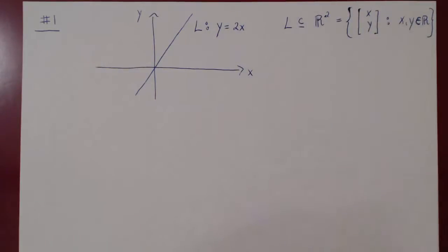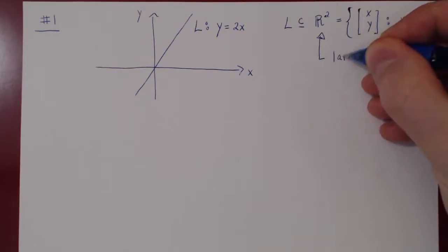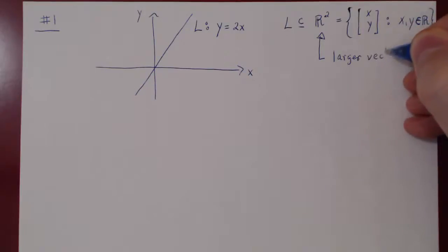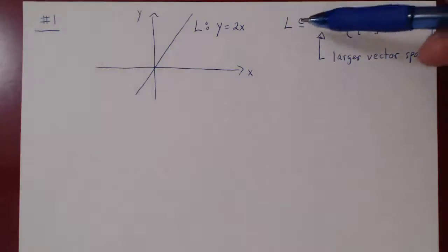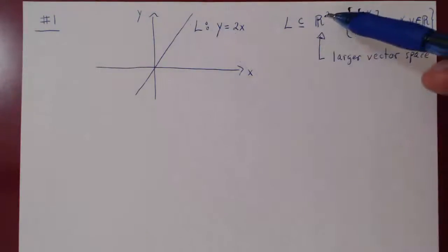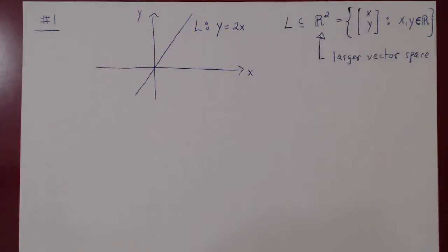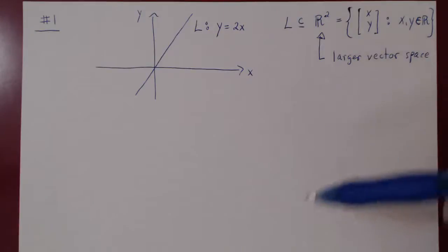We know R² is a vector space — Rⁿ for any positive n is a vector space — so R² here will play the role of our larger vector space. Now that we have a subset of a known vector space, we can decide whether L is a subspace of R², using the subspace theorem: checking closure under addition and closure under scalar multiplication. We do not have to prove that axioms 3 to 10 also hold.